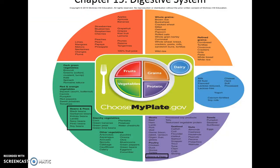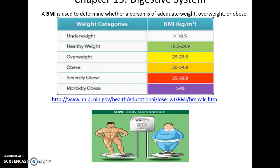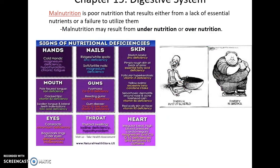This is how we talk about proper nutrition and the proper diet. BMI is used to determine if someone is of adequate weight, overweight, or obese, but again this can be a little confusing. Overall, it's best to be at your healthy weight rather than outside the healthy range. Malnutrition means you have poor nutrition. This can either be from lack of essential nutrients or failure to utilize them. There's undernutrition — people starving because they're not getting enough food and nutrition — and overnutrition, where people are eating way too much and becoming very obese, which can also make them very sick.